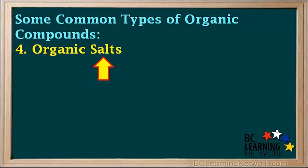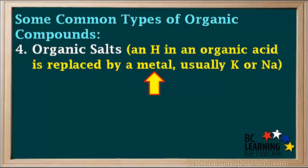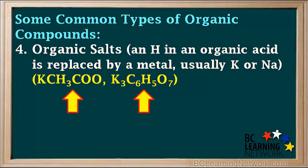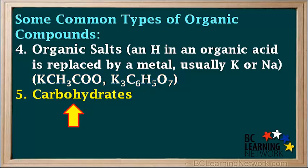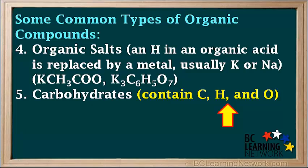A fourth type of organic compound is organic salts. In an organic salt, a hydrogen atom in an organic acid is replaced by a metal, which is usually K or Na. A couple of examples are potassium acetate KCH3COO and potassium citrate K3C6H5O7.